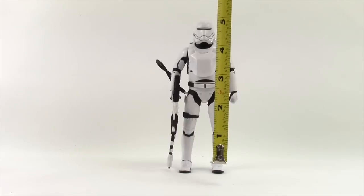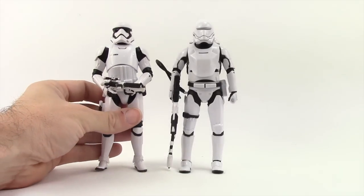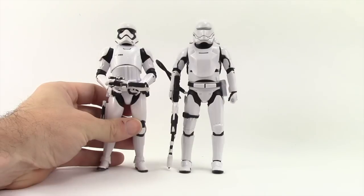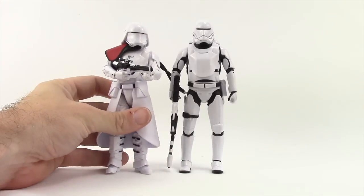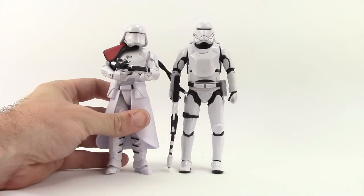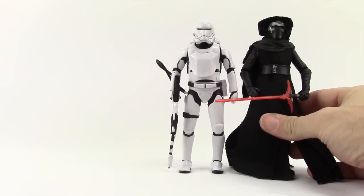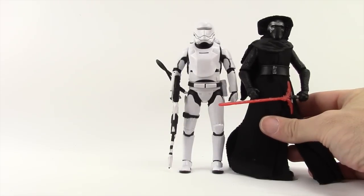The figure stands just over six inches tall, about the same height as the other Stormtroopers in this line. Here's a regular First Order Stormtrooper—they're about the same height. Kylo Ren is maybe a hair taller, especially with the hood, but they're pretty close.